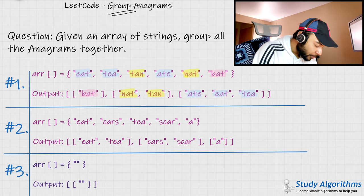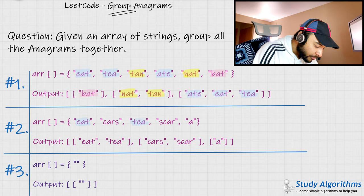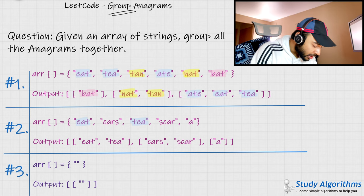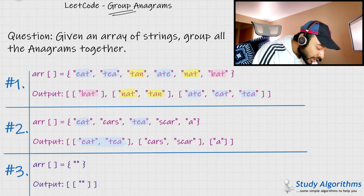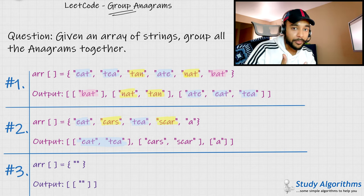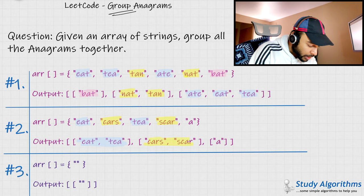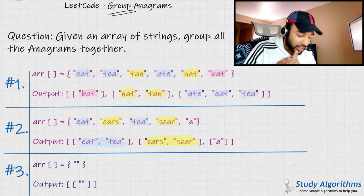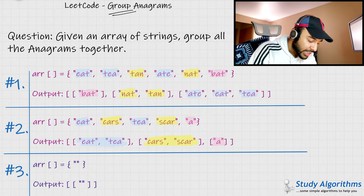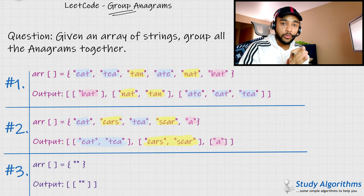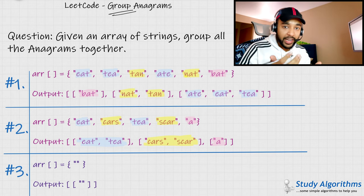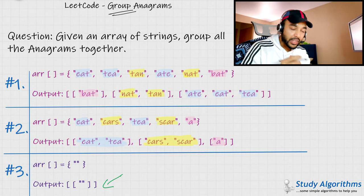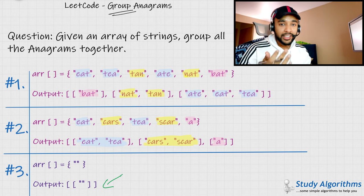Similarly, in test case number two, the words 'eat' and 'tea' have the same characters and hence they form a group. It is not necessary that you can only have three characters — 'cars' and 'scar' also have the same characters and hence they form a group. A single letter is a group in itself, so you have a third group of a single letter 'a'. In test case number three, which is an edge case, your input is empty and hence your output will also be empty, because you weren't able to find any groups.